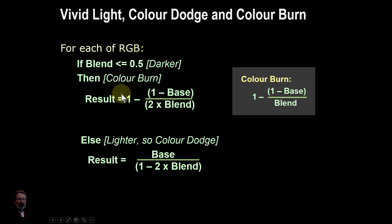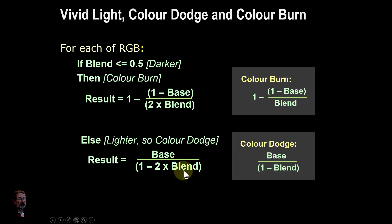And the alternative then is if it's not less than or equal to 0.5, then it must be greater than it, in other words it's lighter. So we use the color dodge, which is like this. And the same thing here, we've got the 2x down here of the blend.